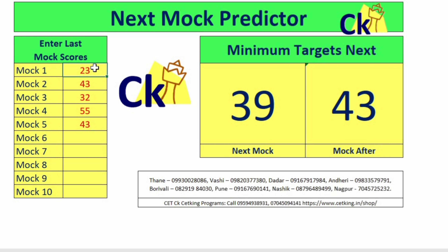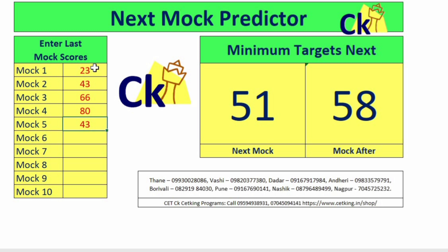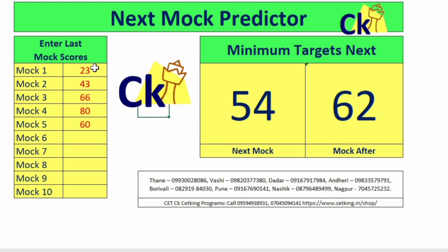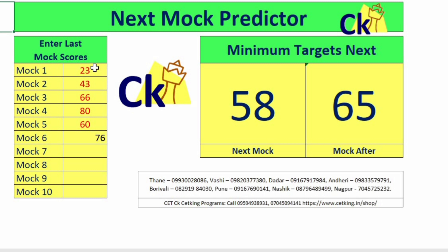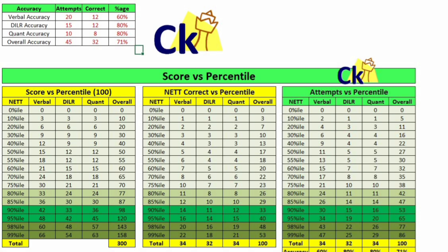What happens normally? For example for the first mock I got 23, 43, then suddenly 66, then suddenly 80. Then the next mock my score dropped to 60. This is where confidence goes down. But if I look at the weighted average of the last five mock scores, I should be scoring 54 plus — so 60 is above that number. Here you can enter up to 10 scores, and it will tell you the weighted average. This is the next mock score predictor, and this is the score versus percentile.